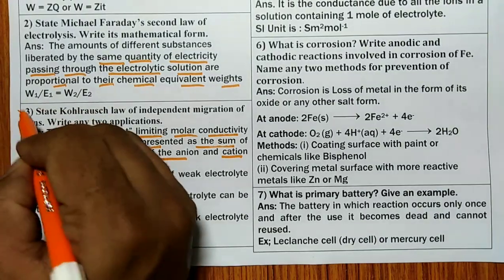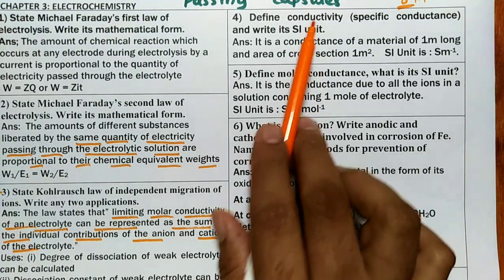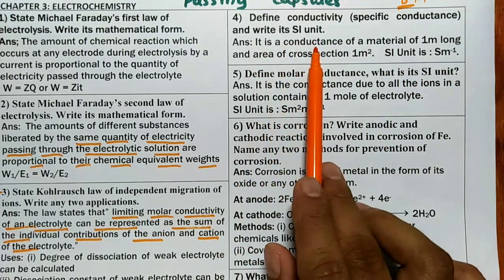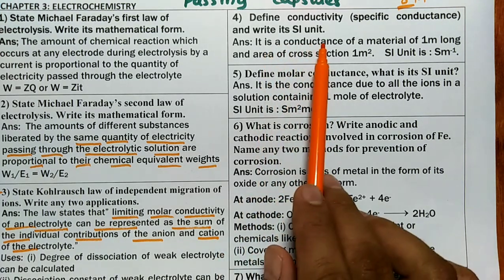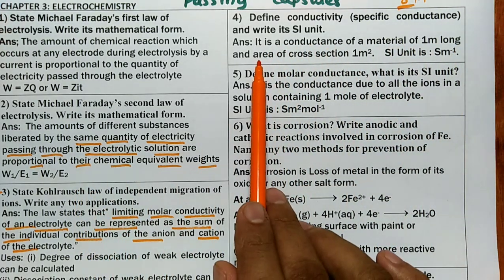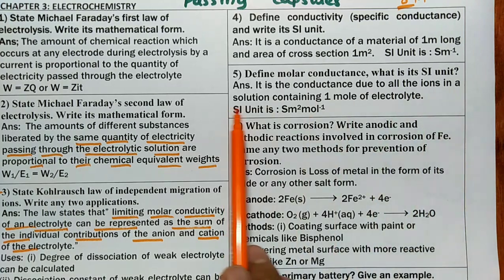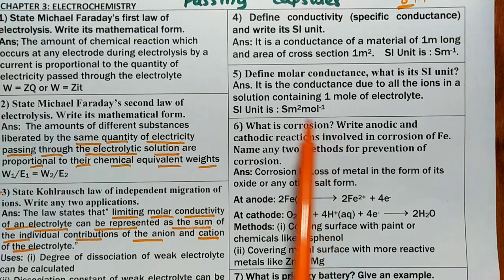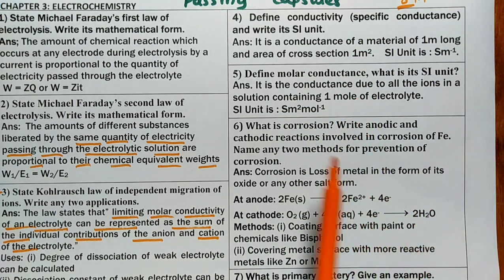Next, define conductivity (specific conductance). It is the conductance of a material of one meter long and area of cross-section one meter square. Its SI unit is siemen per meter. Molar conductivity is the conductance due to all the ions present in one mole of electrolyte. Its SI unit is siemen meter squared per mole. Remember these definitions and SI units.